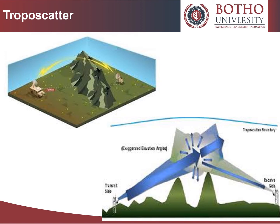Terrestrial microwave relay links are limited in distance to the visual horizon — a few tens of miles or kilometers depending on tower height. Tropospheric scatter, also called troposcatter, was a technology developed in the 1950s to allow microwave communication links beyond the horizon to a range of several hundred kilometers. The transmitter radiates a beam of microwaves into the sky at a shallow angle above the horizon toward the receiver.